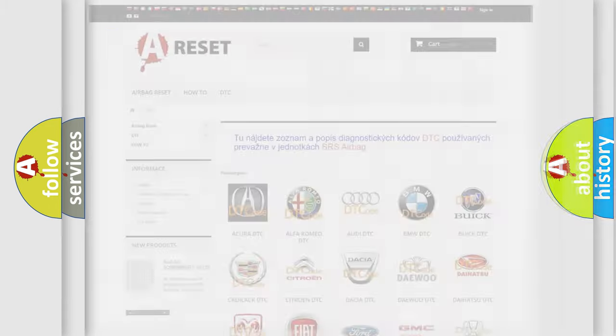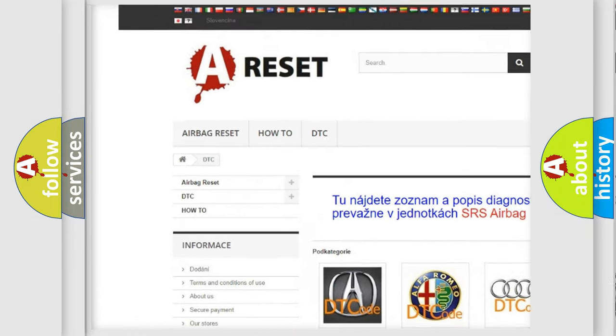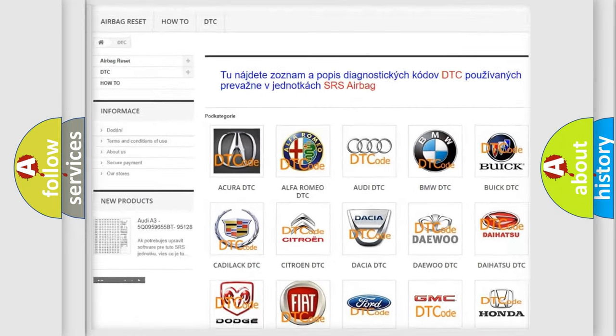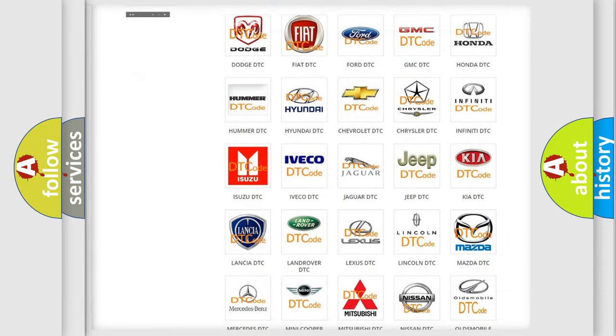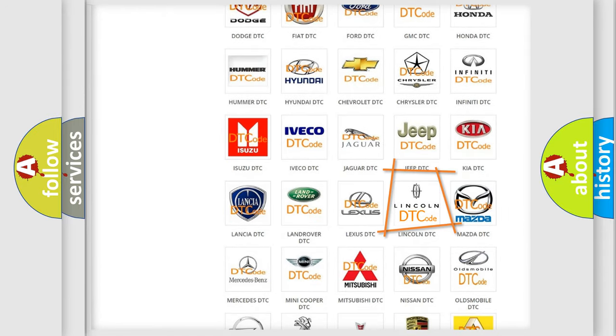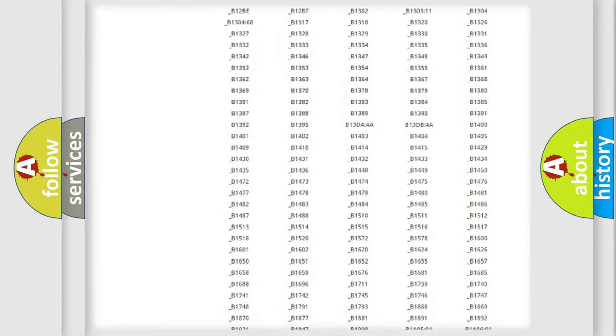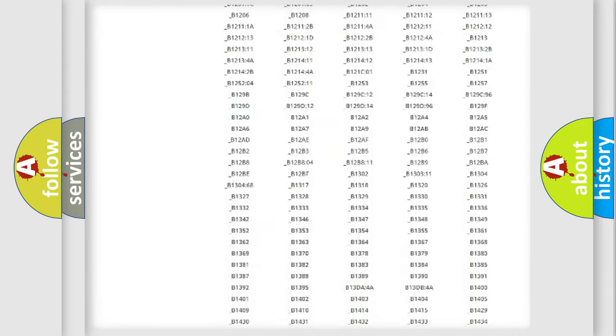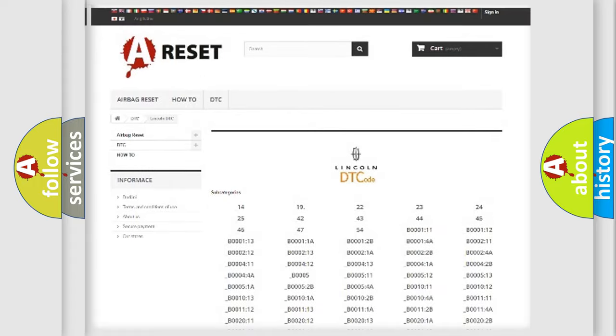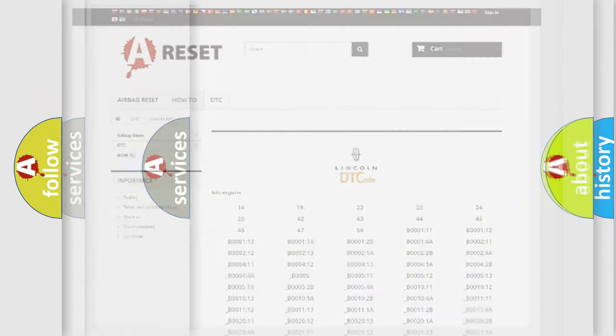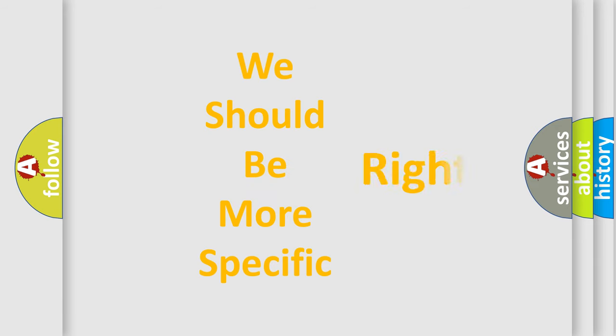Our website airbagreset.sk produces useful videos for you. You do not have to go through the OBD2 protocol anymore to know how to troubleshoot any car breakdown. You will find all the diagnostic codes that can be diagnosed in Lincoln vehicles, and many other useful things. The following demonstration will help you look into the world of software for car control units.